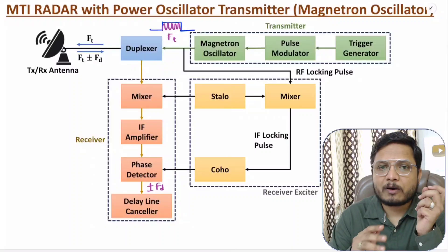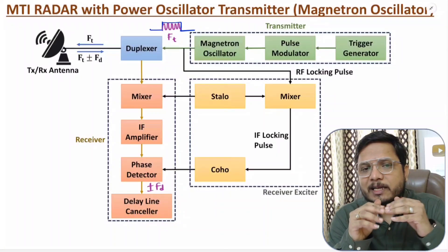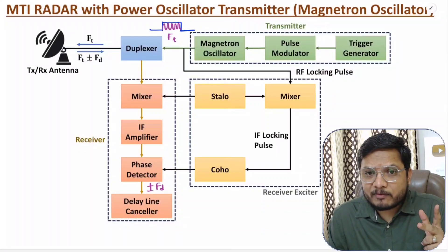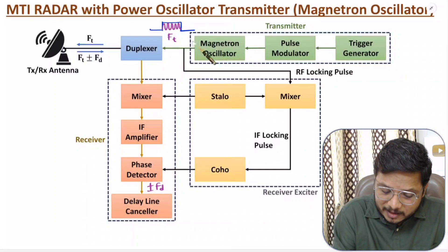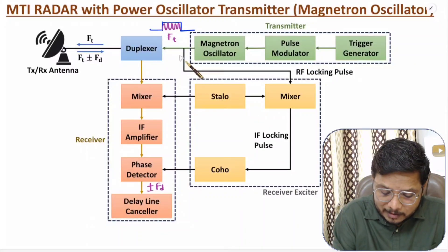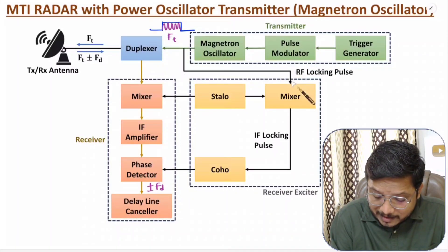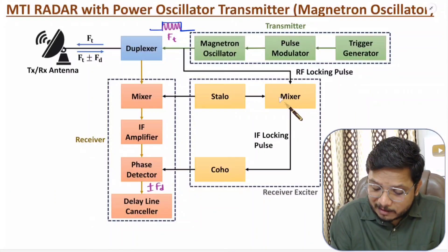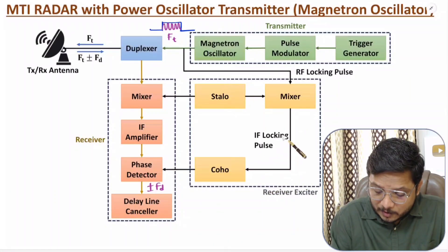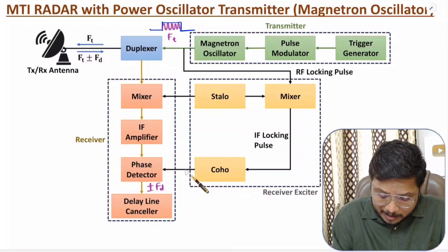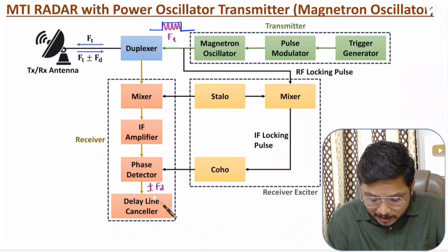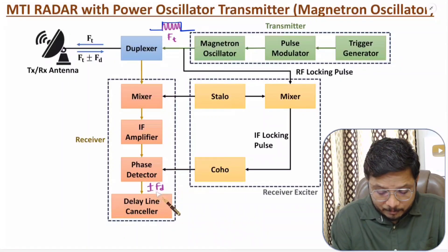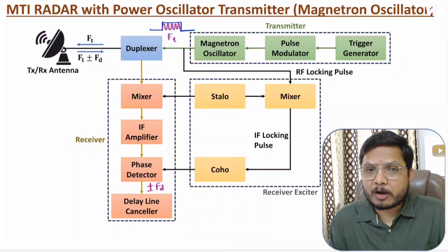Everything is similar to MTI radar with power amplifier. The key difference is that here we use a magnetron oscillator generating a high power RF signal pulse via pulse modulation. The partial signal is given to the receiver exciter for the RF locking pulse, the mixer generates the IF locking pulse, the IF frequency is locked at the phase detector, and the output signal has plus or minus FD to identify objects in motion.